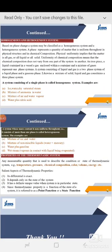A heterogeneous system is one whose mass content is non-uniform throughout and consists of more than one phase. Examples include a mixture of ice and water, water plus mercury (since mercury does not dissolve in water), water plus gasoline, and wet steam — vapor in contact with liquid being evaporated.